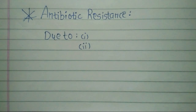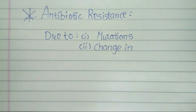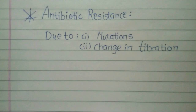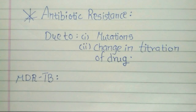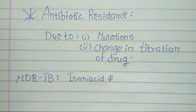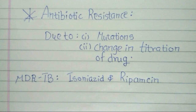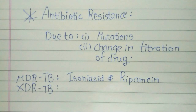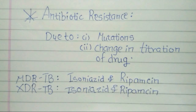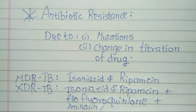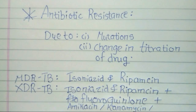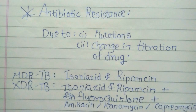Antibiotic resistance in M. tuberculosis typically occurs either due to accumulation of mutations in the genes targeted by the antibiotic or a change in titration of the drug. M. tuberculosis is considered multi-drug resistant, or MDR-TB, if it has developed resistance to both rifampicin and isoniazid. Additionally, extremely drug-resistant tuberculosis, XDR-TB, is characterized by resistance to both isoniazid and rifampicin, plus a fluoroquinolone and at least one of the three injectable second-line drugs — that is, amikacin, kanamycin, or capreomycin.